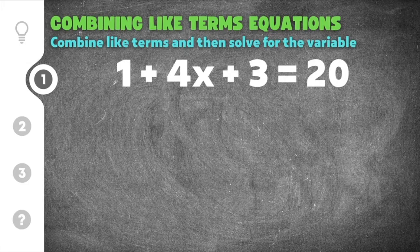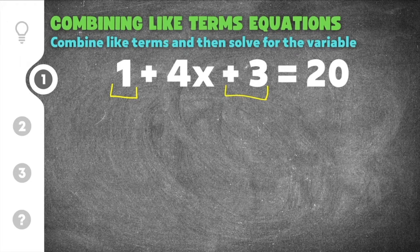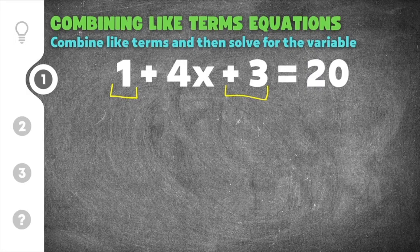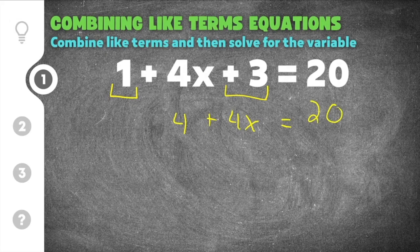In the case of this problem, our like terms are the constants — the numbers. Numbers or constants will always be like terms, which means you can always combine them. So the first thing we need to do is add the 1 and the 3 together. 1 plus 3 is 4, then we bring down the plus 4x and equals 20. So we've combined those two like terms.